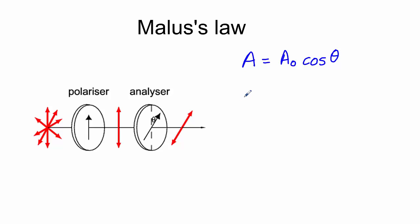The amplitude isn't as useful to us, however, as the intensity, but you'll remember from a previous video that intensity is proportional to the square of the amplitude. So if we square both sides of our equation here, we'll get A squared equals A naught squared cos squared theta.